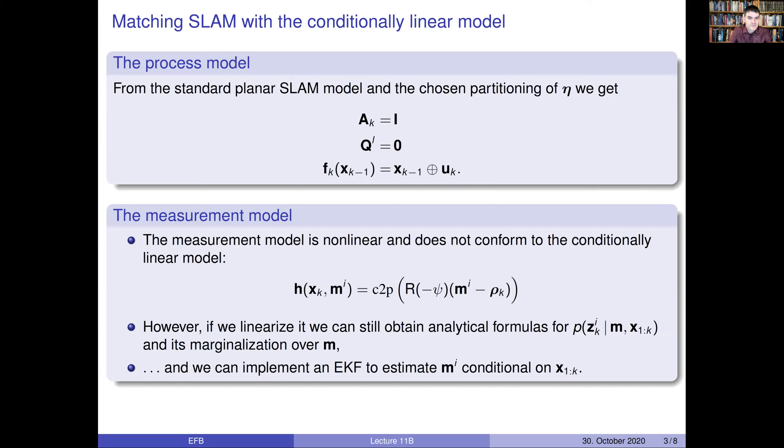In addition to the process model, we have a measurement model involving this Cartesian-to-Polar conversion. And then we have a rotation matrix involving the orientation. But this rotation matrix is not a violation of linearity because remember we are conditioning on the nonlinear part where this orientation is. So, that is fine. This Cartesian-to-Polar conversion is problematic, but we can linearize it or we can use the converted coordinates. So, this is also fine. It's not a big deal.